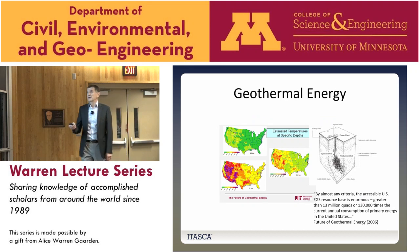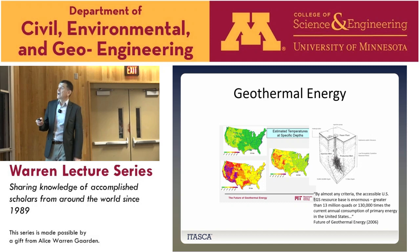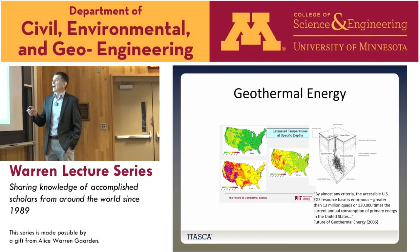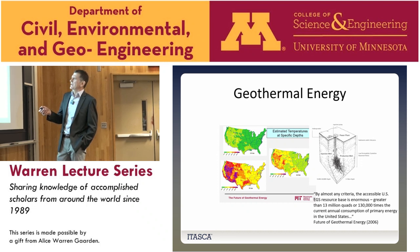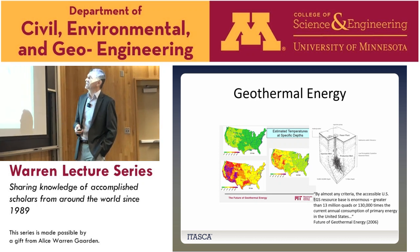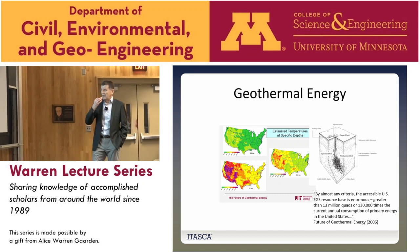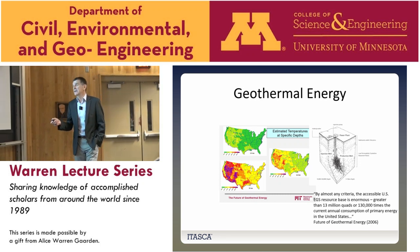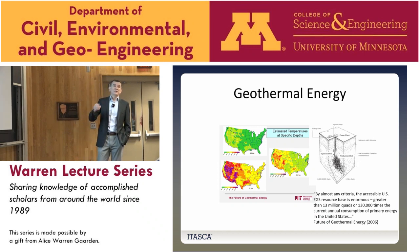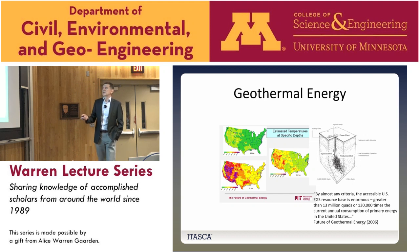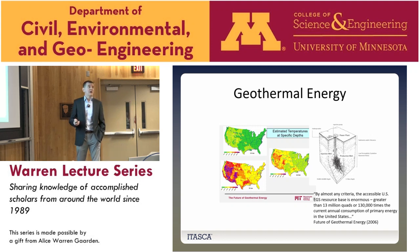Here are a few maps of the United States showing contours of temperature at different depths: 2.5 kilometers, 6.5, and 10. The purple color represents 350 degrees C and yellow represents 200 degrees. Jeff Tester wrote a report in 2006 in which he claimed that the geothermal energy stored at accessible depths is equivalent to 130,000 times the current annual consumption of primary energy in the United States.